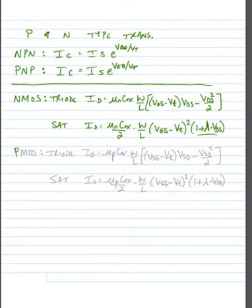For PMOS, we reverse the subscripts so GSs become SGs and so on and so forth. So in the triode region, ID is equal to mu PCOX times W over L times VGS minus VT times VSD minus VSD squared over 2.